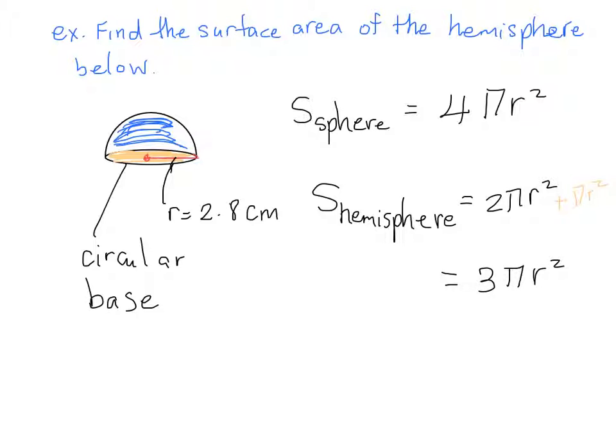So just to reiterate, it's 3πr² because we have that blue area right here, as well as this mystery color area at the bottom, the circle at the bottom.